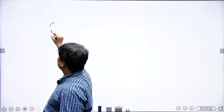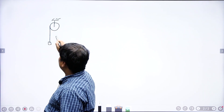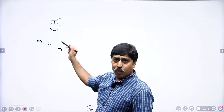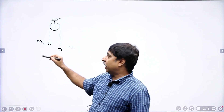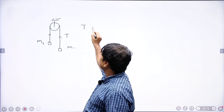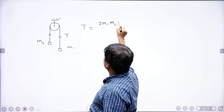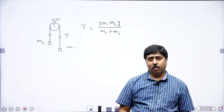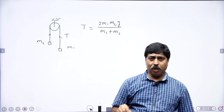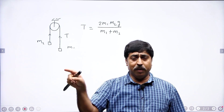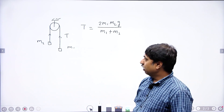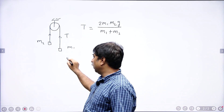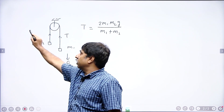One very simple fact: if I have an Atwood machine — pulley is massless, string massless and inextensible — then if m₁ is greater than m₂, the tension in the string is given by 2m₁m₂g divided by m₁ plus m₂. You can also write the acceleration of these two blocks using the formula m₁ minus m₂ into g divided by m₁ plus m₂. Also, if the pulley is fixed, both masses travel with the same magnitude of acceleration.